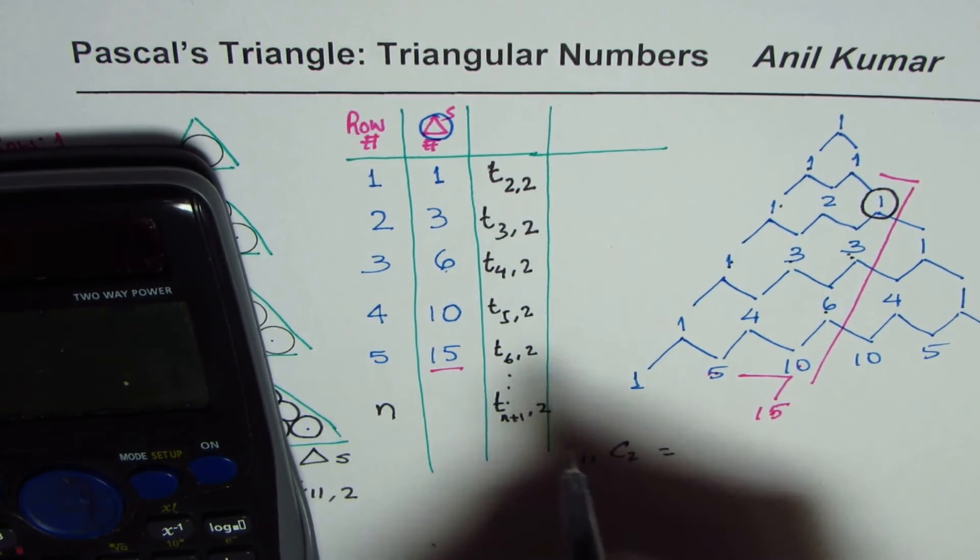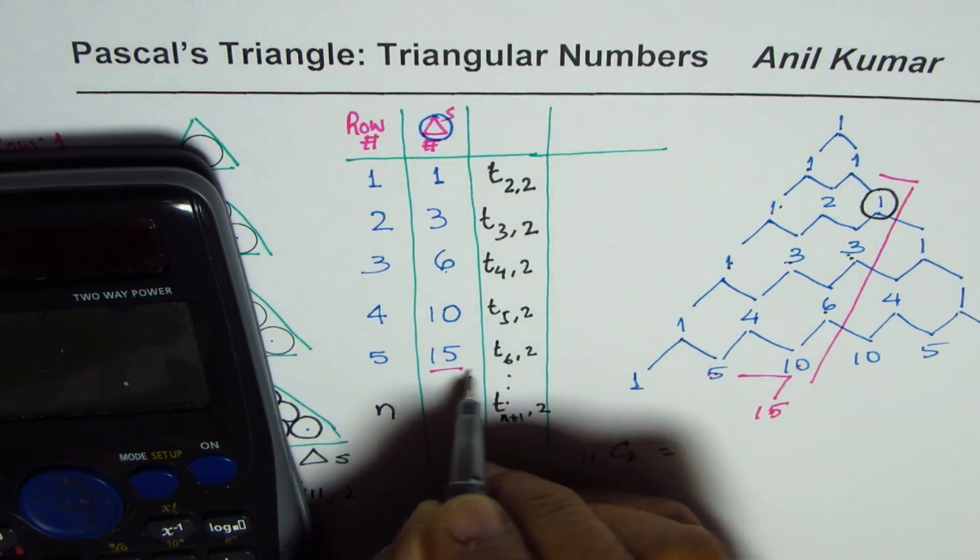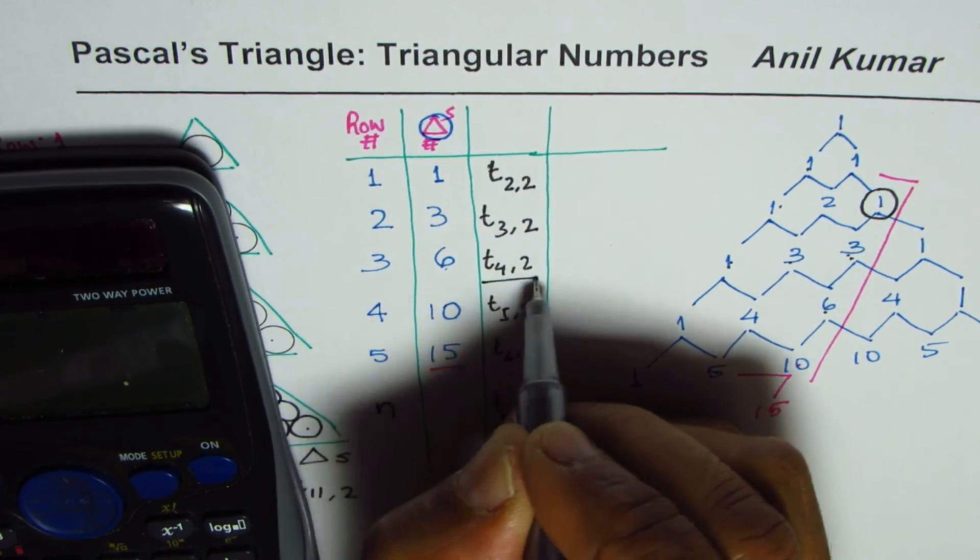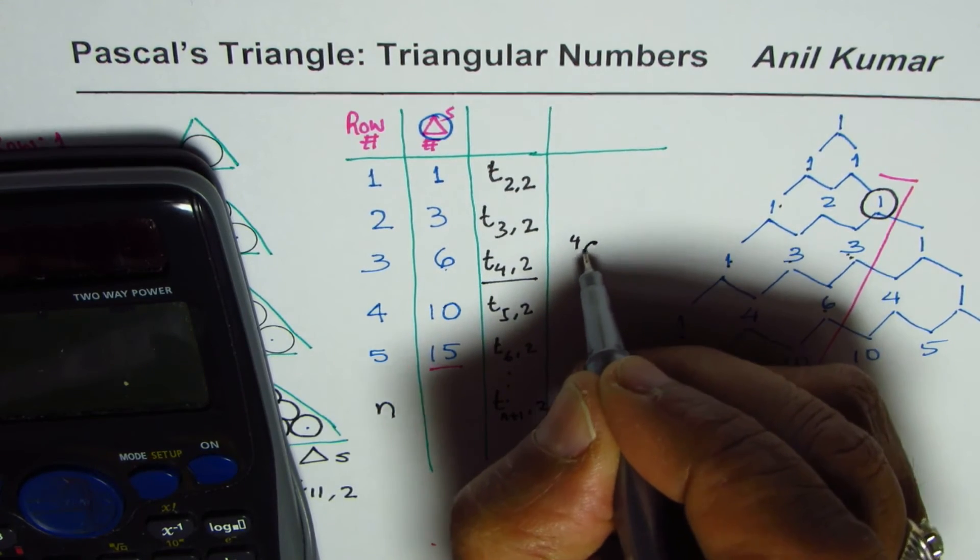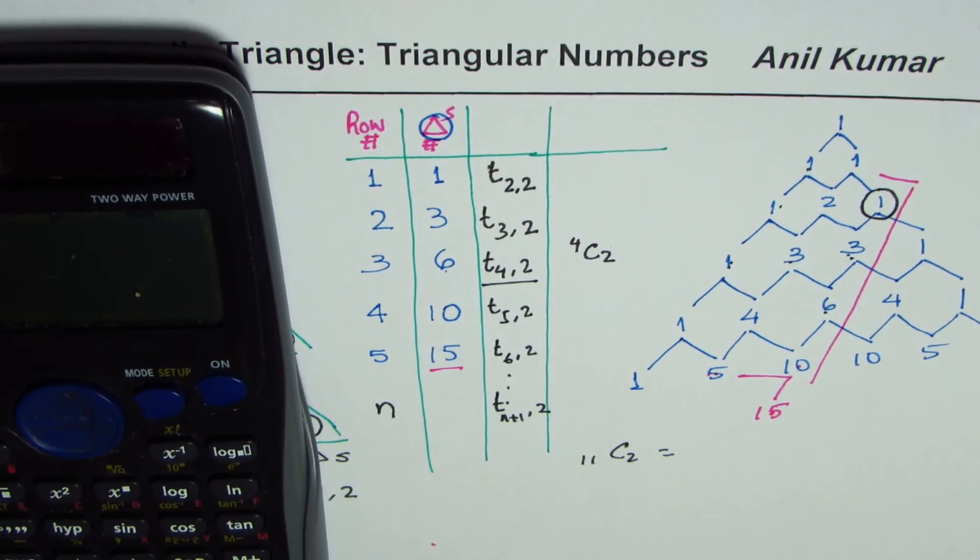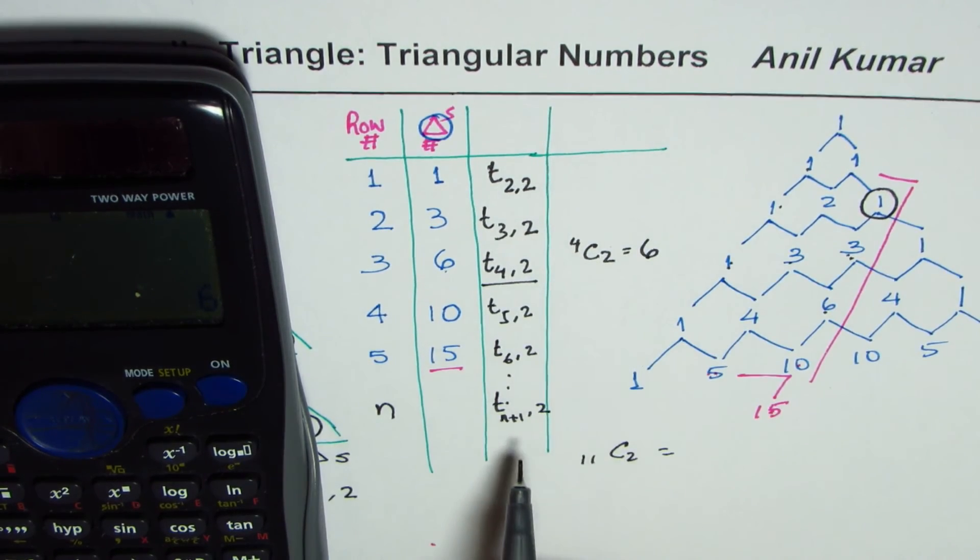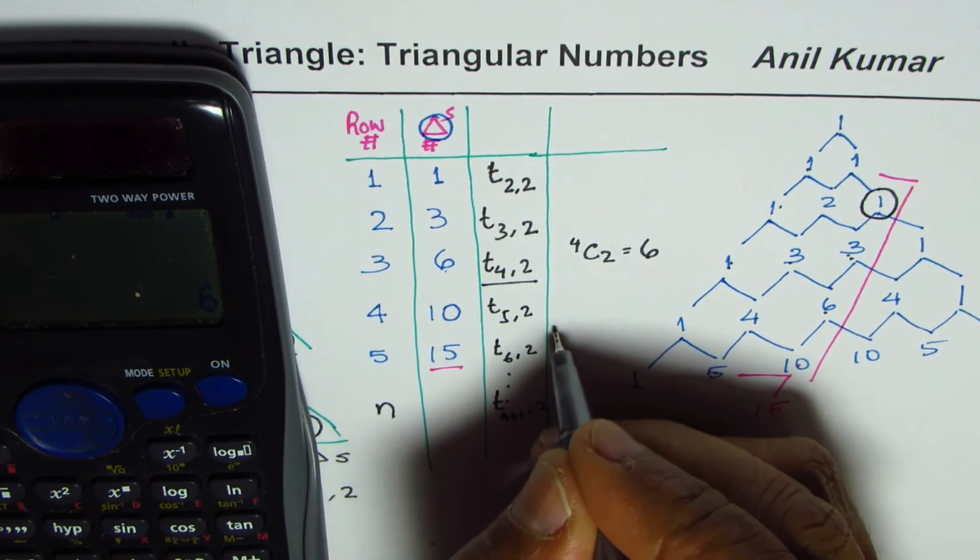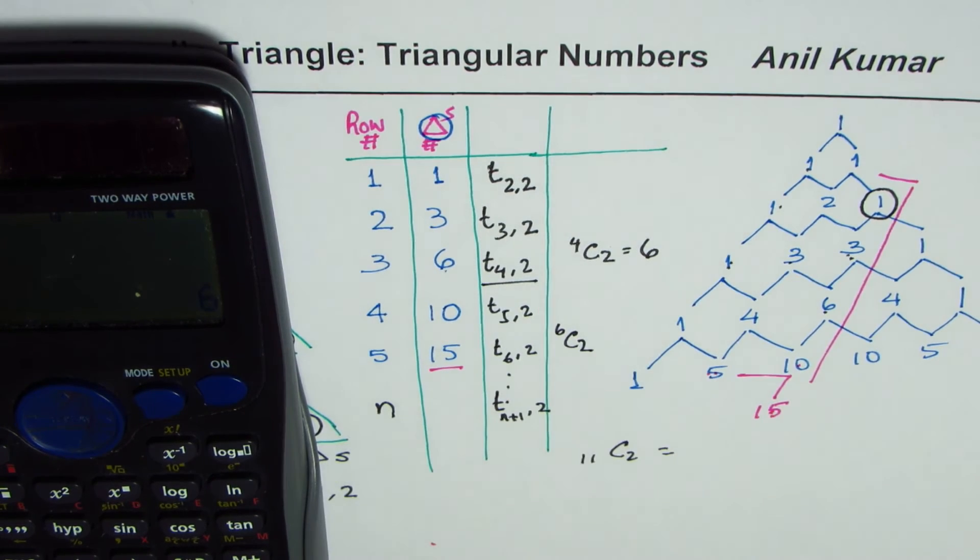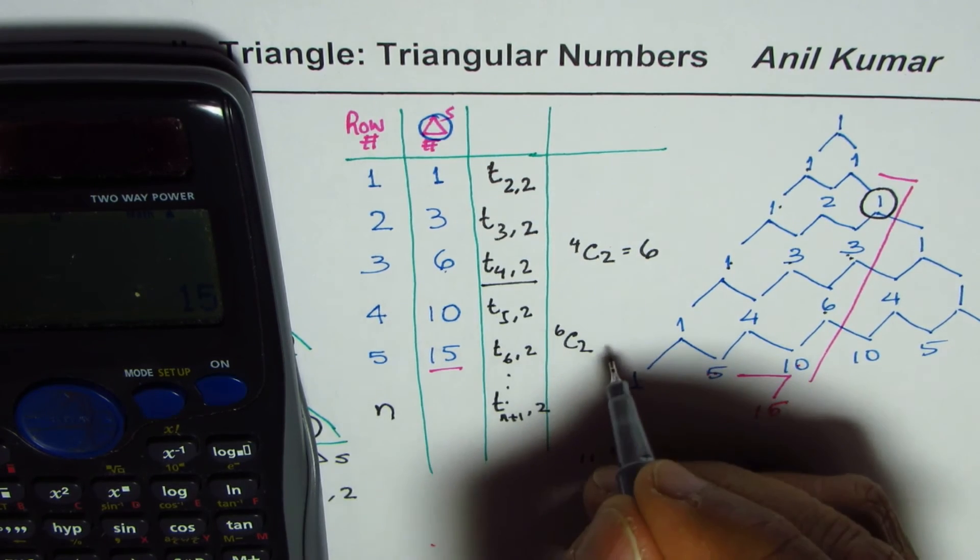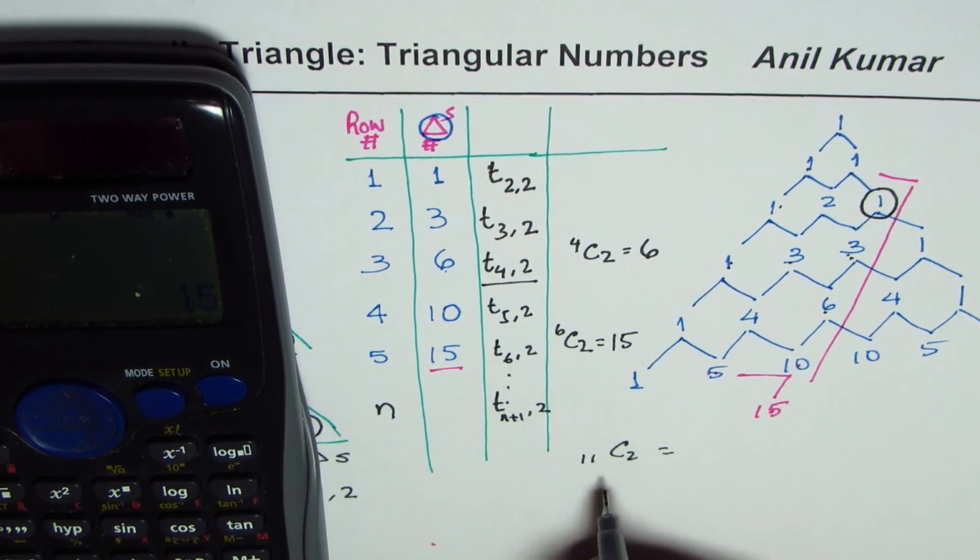Let me first check one of these values. Let us say we check this, that is 4C2. So if I use calculator, we say 4, combination C2. It gives us a number 6. We know it is 6. If I try 6C2, what do I get? I get 15. So this is 15.